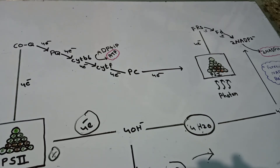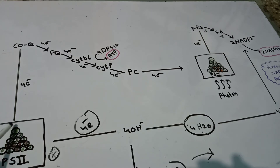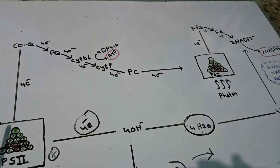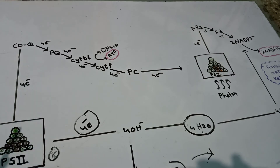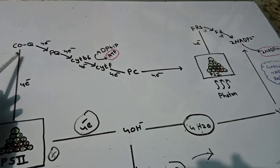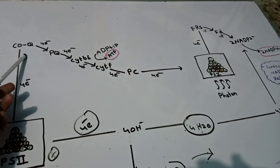Photosystem 2 receives sunlight and releases photons — packets of energy. These packets of energy are captured by the accessory pigments and transferred to the Chlorophyll A molecule, or the reaction center molecule. The reaction center gets excited and after getting excited, it jumps to a higher energy level. After receiving more energy, it ejects the electron.